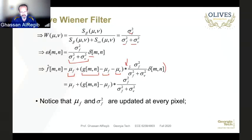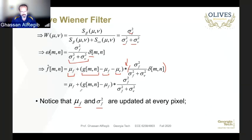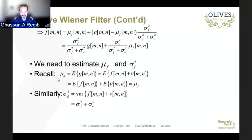In the spatial domain this becomes a spatial linear filter which simplifies to a specific form. As you shift the window to the next pixel, you need to update the local mean μ_f and local σ_f, with small changes, and update them into the equation. Once you do that you have another estimate of f-hat for that particular pixel, and you keep doing this as you shift.